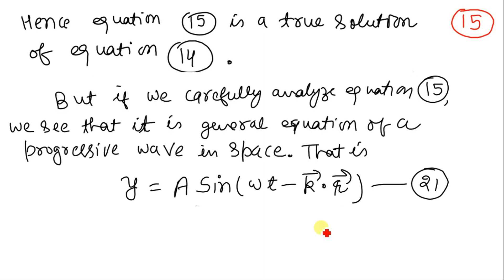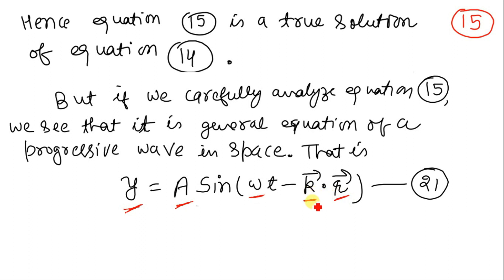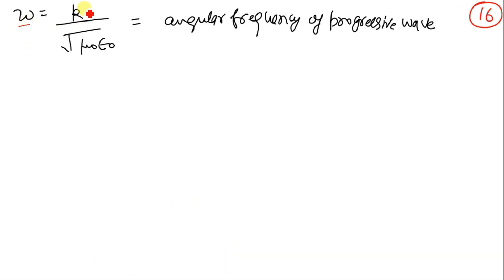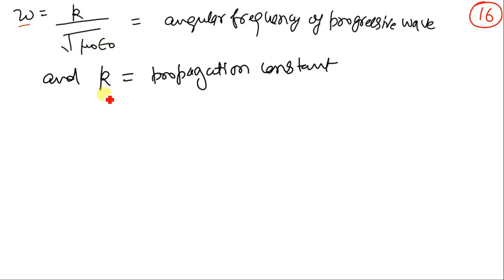Analyzing equation 15, we see it resembles the general equation of a progressive wave traveling in three-dimensional space: y = A sin(ωt − k·r), where k vector is the propagation constant, ω is angular frequency, A is amplitude, and y (or psi) is the wave function. The role of y is played by psi (electric or magnetic field), the role of A by psi_0, and the role of angular frequency ω is played by k/√(μ₀ε₀), while k remains the propagation constant.